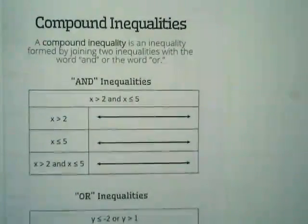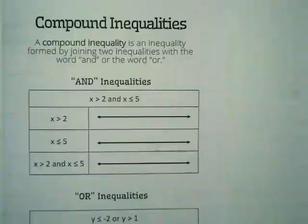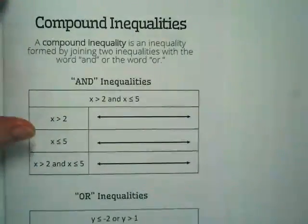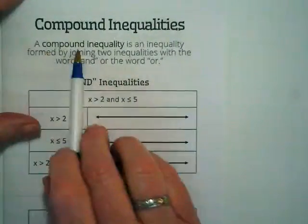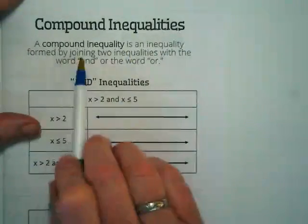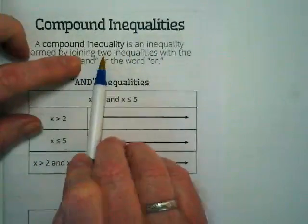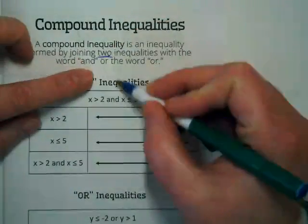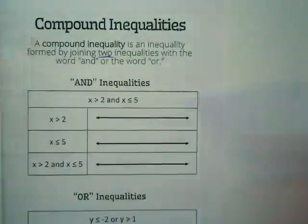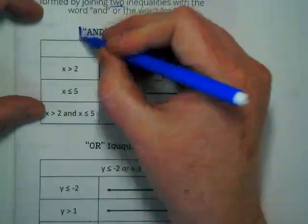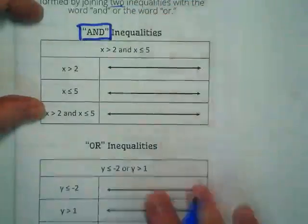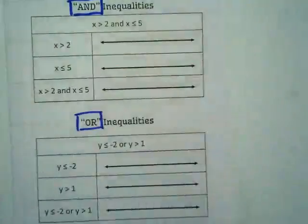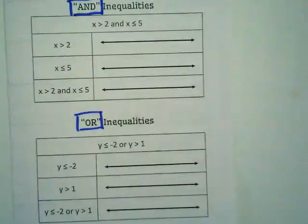I'd like you with a pencil to actively read the definition together. I'll read it out loud, you guys are reading it along with me in your head. A compound inequality is an inequality formed by joining what? Two inequalities with the word and or the word or. I would like you to look down below and you will see we have and and we have or, just like a compound word puts two words together.